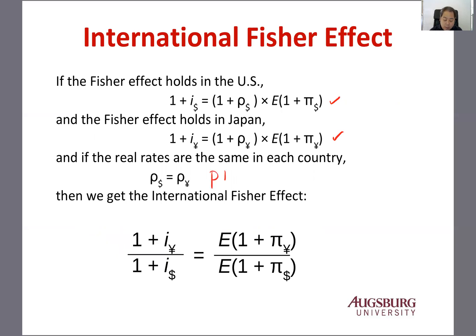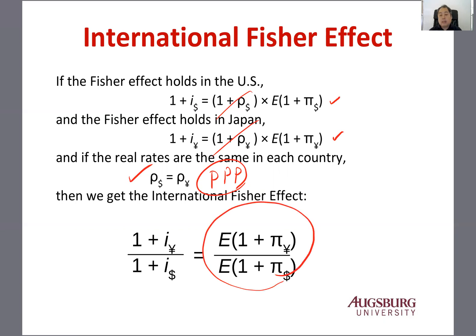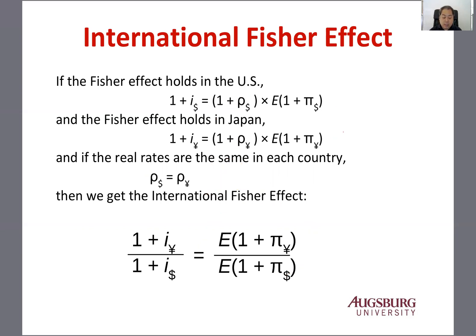Purchasing power parity says that the real rate should be the same. If the real rates are equal, you can cancel them out, and then 1 plus the yen interest rate divided by 1 plus the nominal dollar interest rate simply equals expected 1 plus inflation of Japan divided by 1 plus United States inflation. That's the International Fisher Effect.